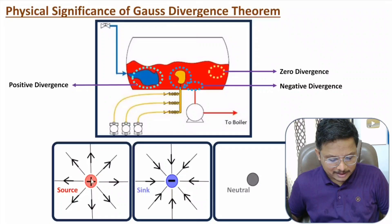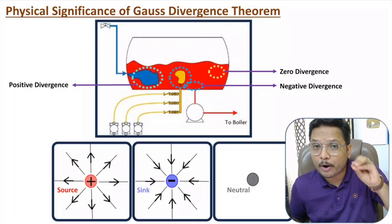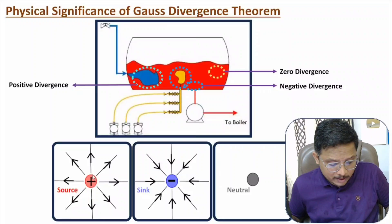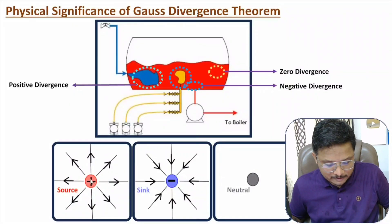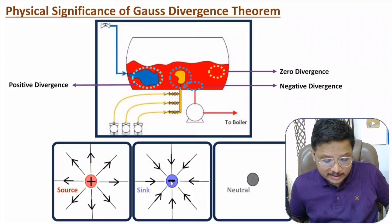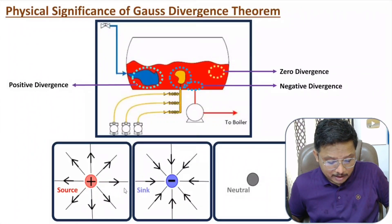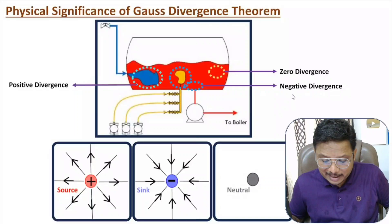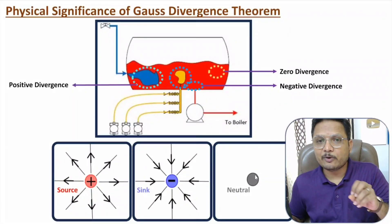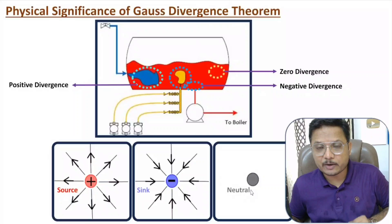Consider a positive charge — the electric field goes outward from the point, so this point is a source because of the positive charge. With a negative charge, electric field lines enter the point, so based on entering flux this point is a sink. For a source, divergence is positive. For a sink, divergence is negative. At a neutral point there is no entering or leaving flux, so divergence is zero — at a neutral point we don't have any divergence.